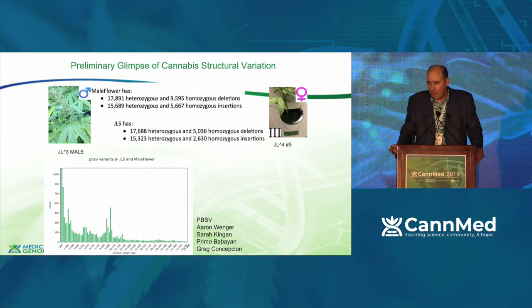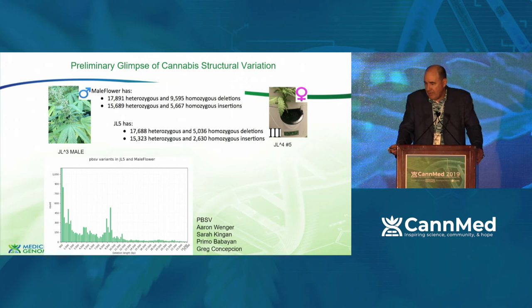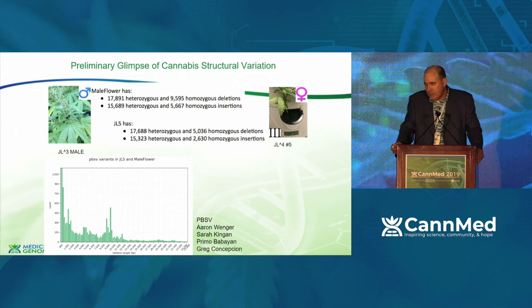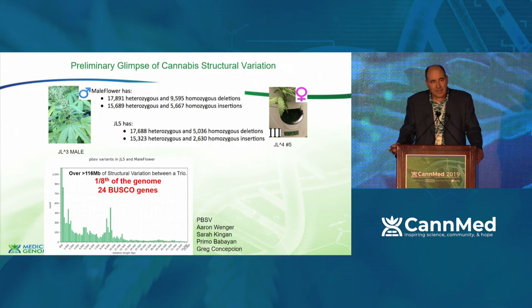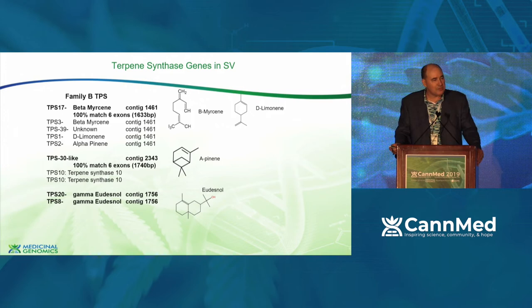We see over 17,000 heterozygous and almost 10,000 homozygous deletions in the male flower, with almost an equal number of insertions. The offspring has a similar number. There's clearly some kind of repeat element in the genome jumping up at around 10 KB being inserted and deleted. In just one inbred trio there's this much stuff jumping around — about an eighth of the genome in structural variation. This is an extraordinarily plastic genome.